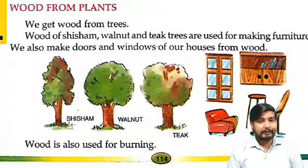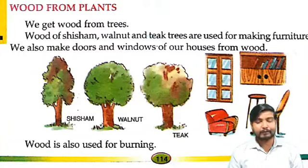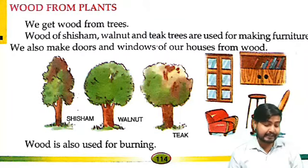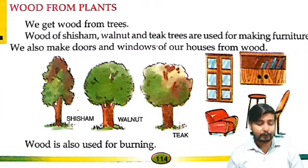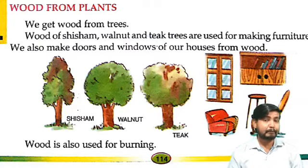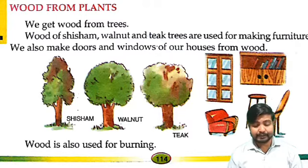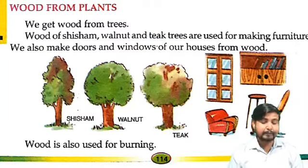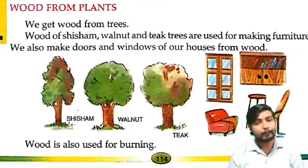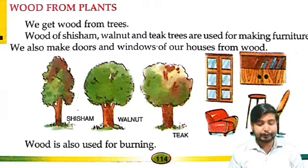Then wood from plants. Hum ghar ke furniture ke liye wood bhi kahan se paate hain? Isi plant se paate hain. We get wood from trees. Hum trees se different types of wood paate hain. Wood of sheesham, walnut, teak tree. Jisse hum wood paate hain, jiski madad se hum apna ghar ka furniture banaate hain. We also make doors and windows of our houses from wood.